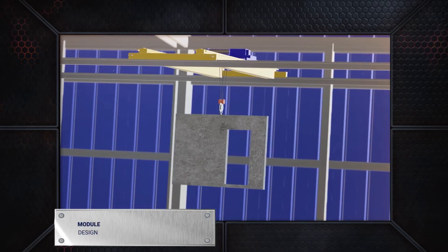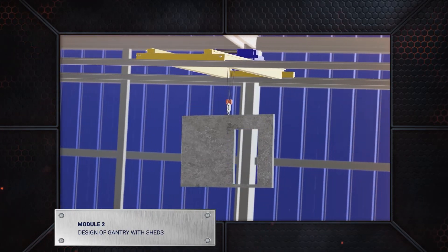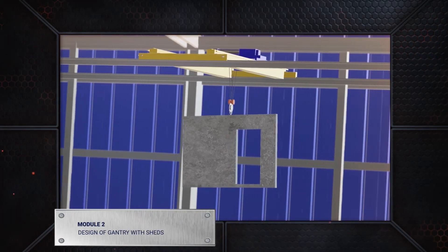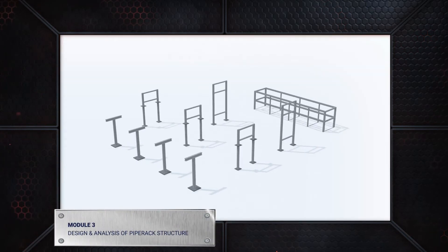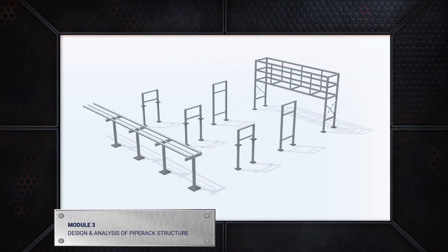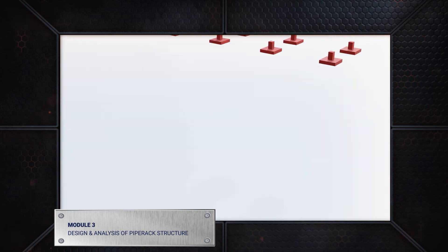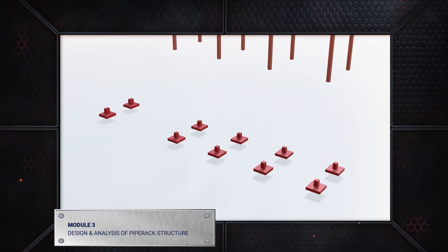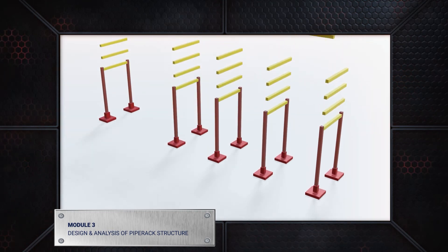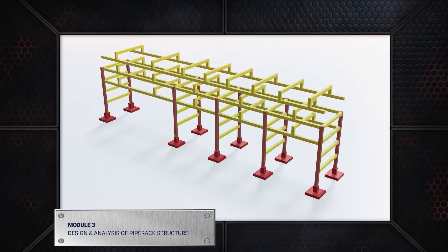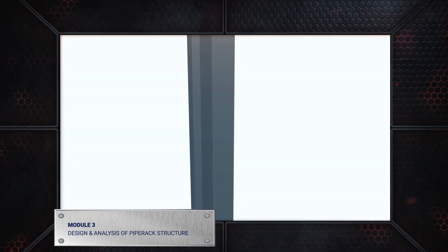Module 2 covers the design of structural steel sheds with gantries using STAT Pro. Module 3 covers everything you need to know about pipe racks that carry instruments and power cables. You will study pipe rack design criteria in detail, including load applications and the design of the pedestal, foundation, and base plate.